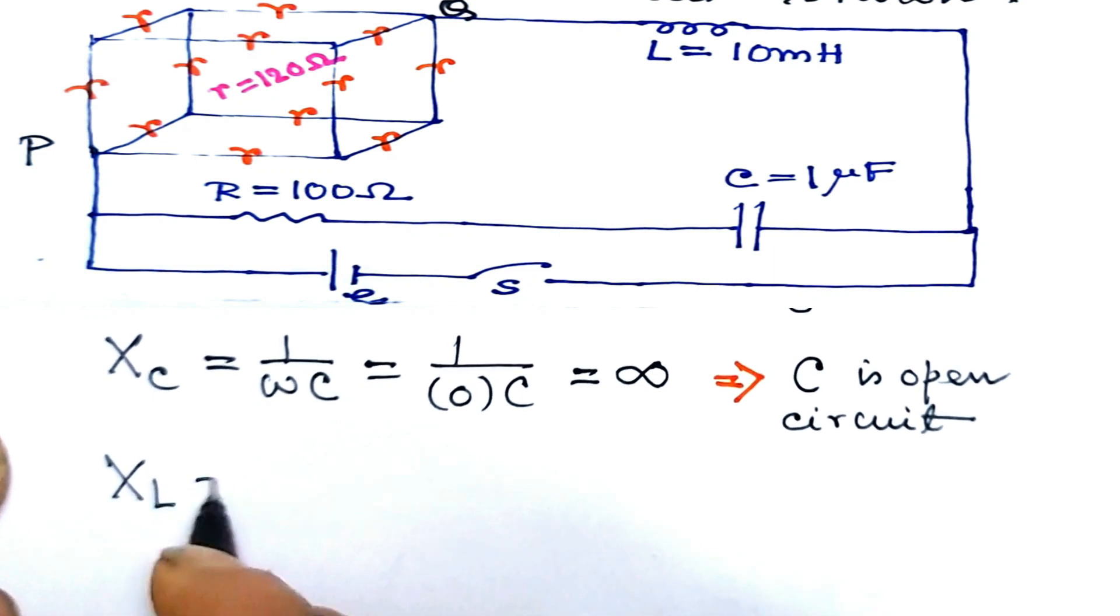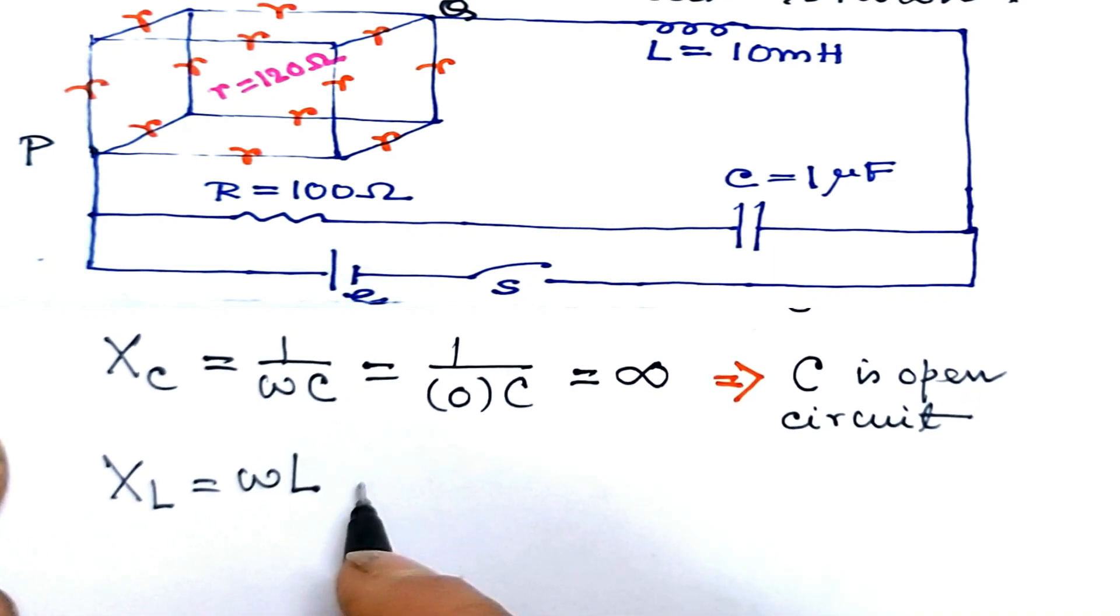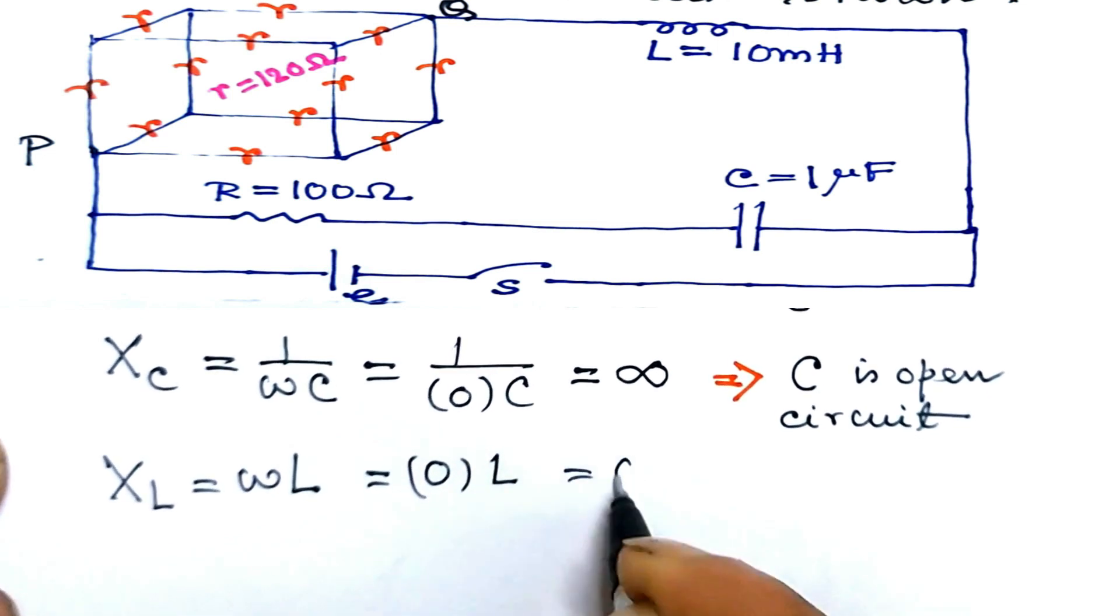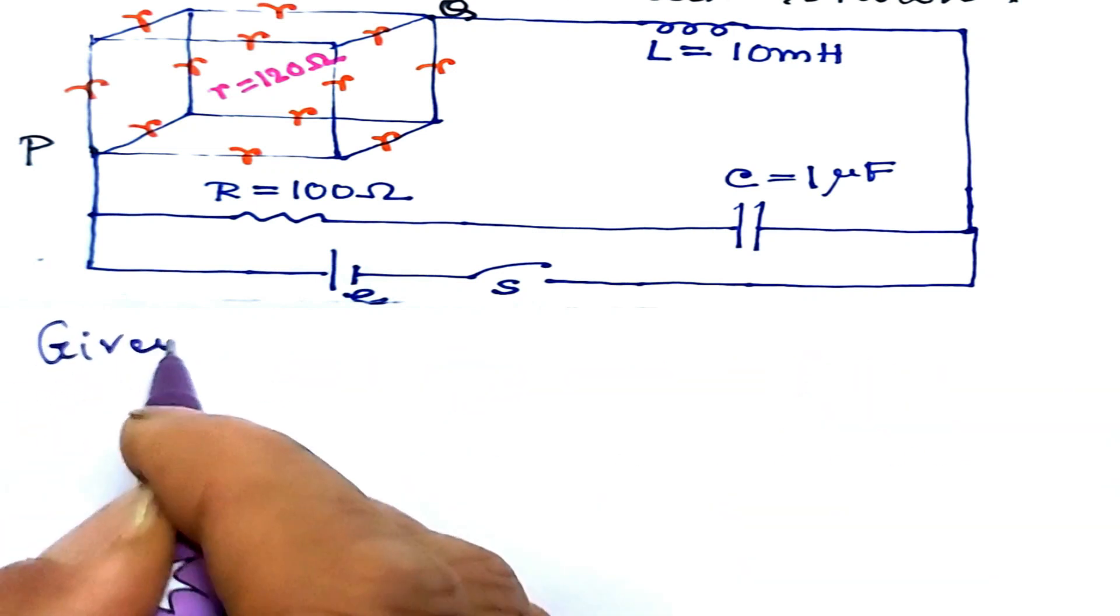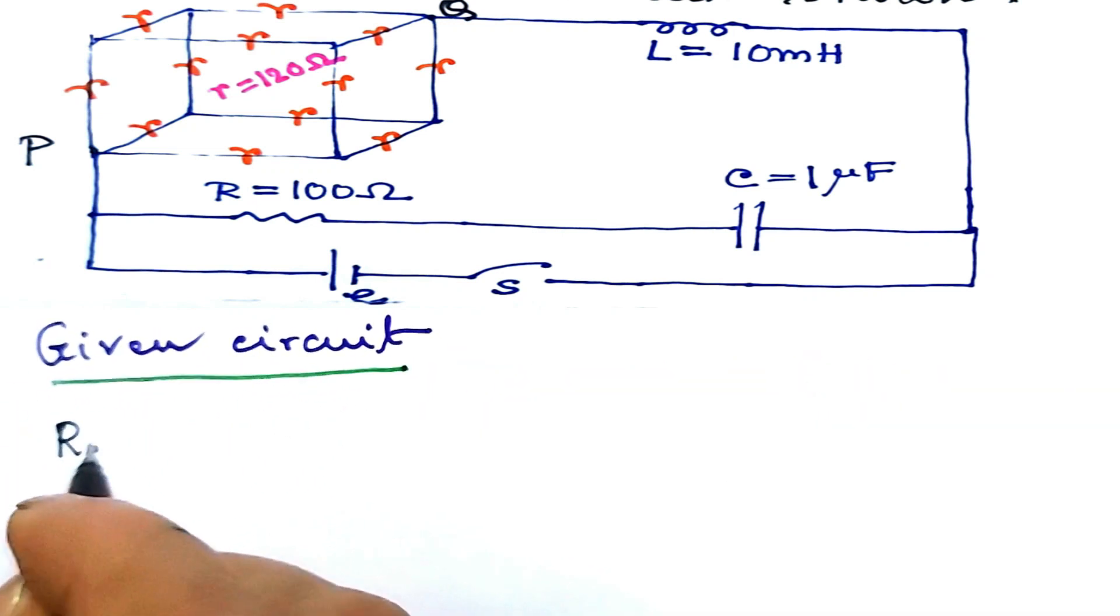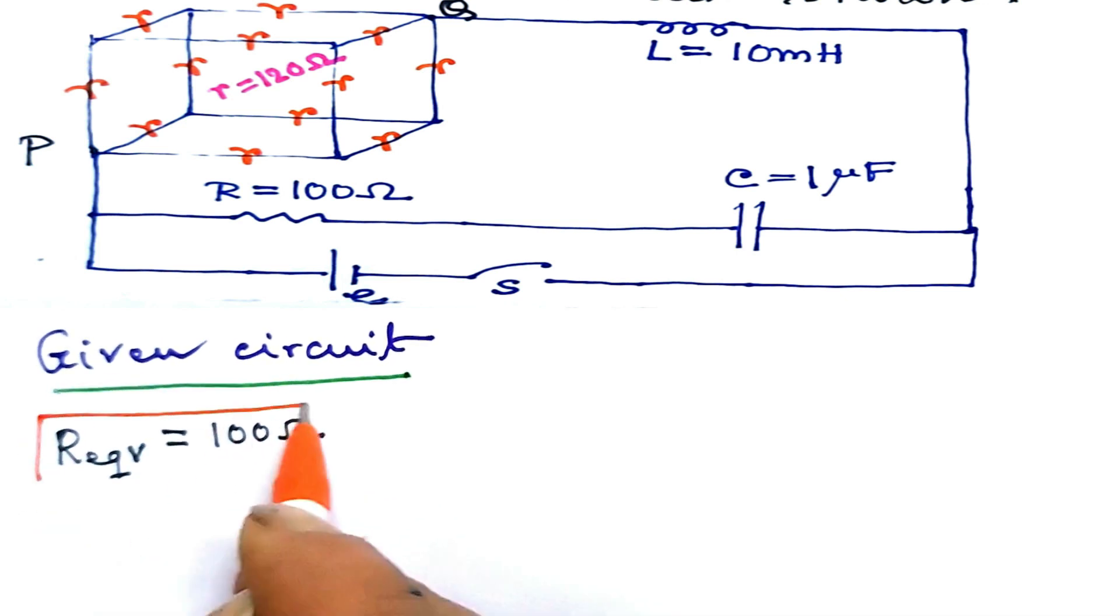Again, reactance of inductor l is xl equal to omega into l. With omega equal to 0, it is 0. This means l is a short circuit. The given circuit, the equivalent resistance is 100 ohm.